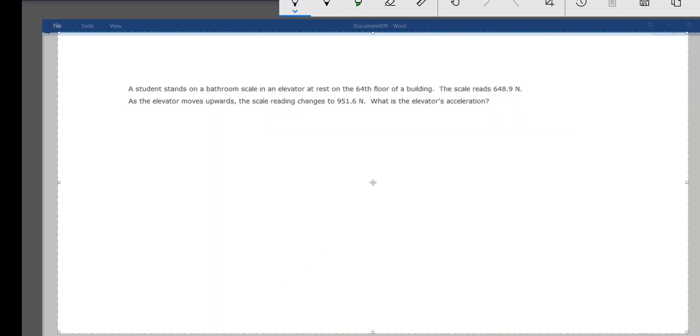Tom's gone. A student stands on a bathroom scale in an elevator at rest on the 64th floor of the building. The scale reads 648.9 newtons. As the elevator moves upward, the scale reading changes to 951.6 newtons. What is the elevator's acceleration? This is a different kind of problem. We've got two situations: when the elevator is at rest and when it's moving. And what we're really concerned about is what's moving. So why do we have the at rest information?